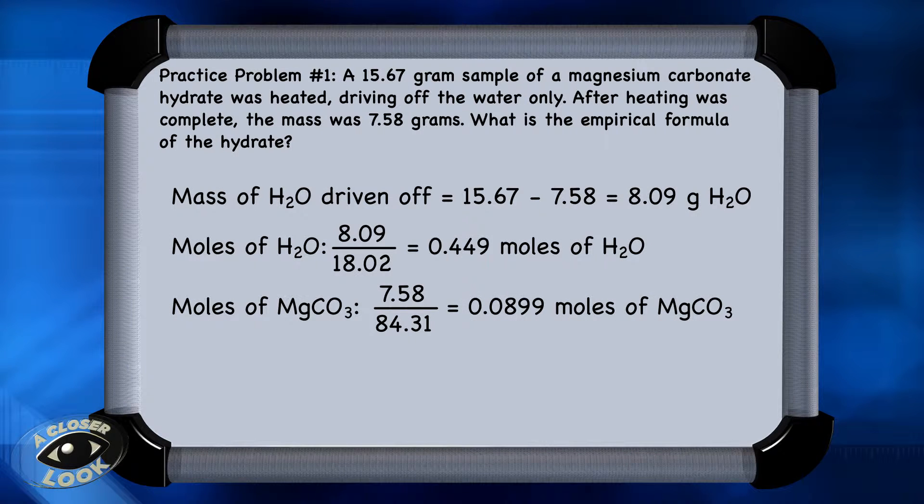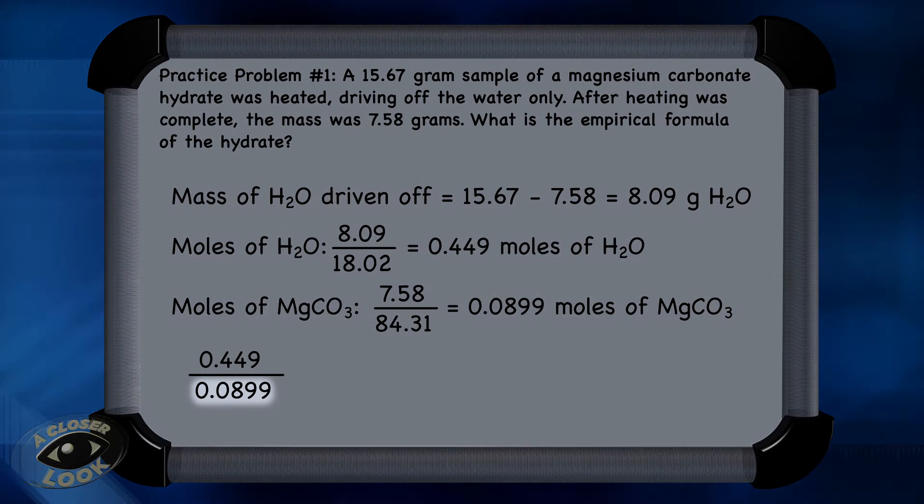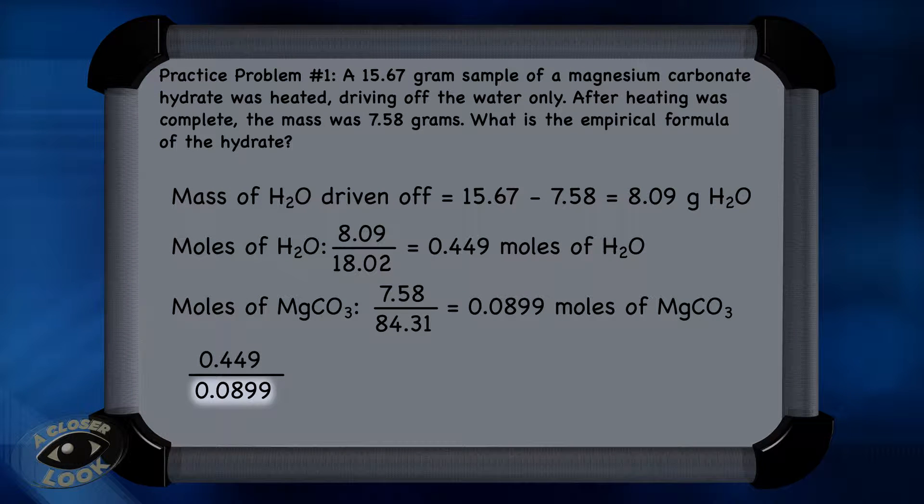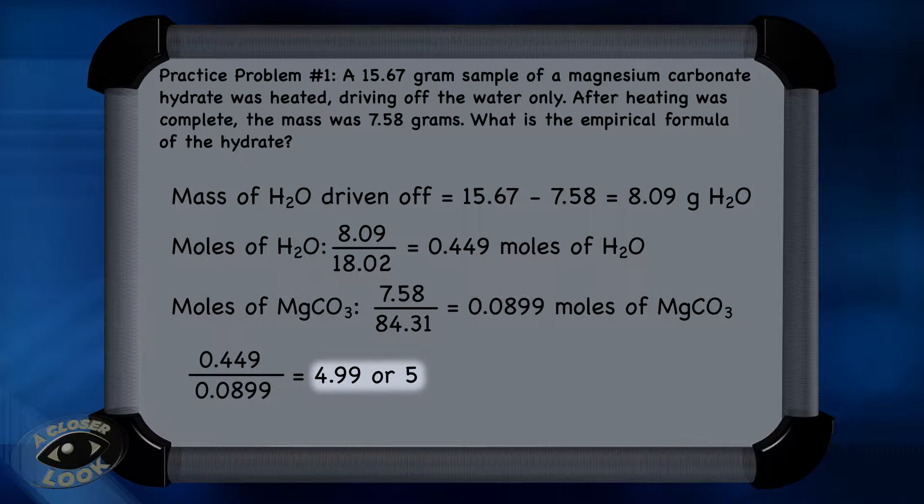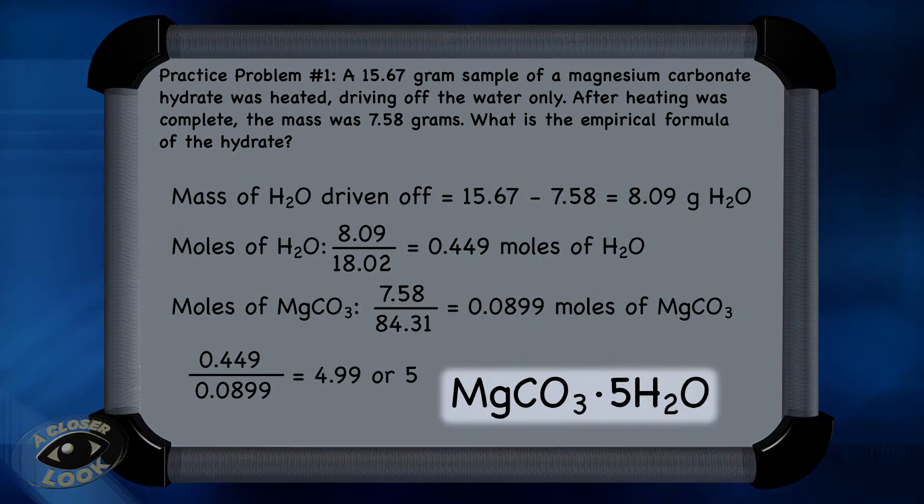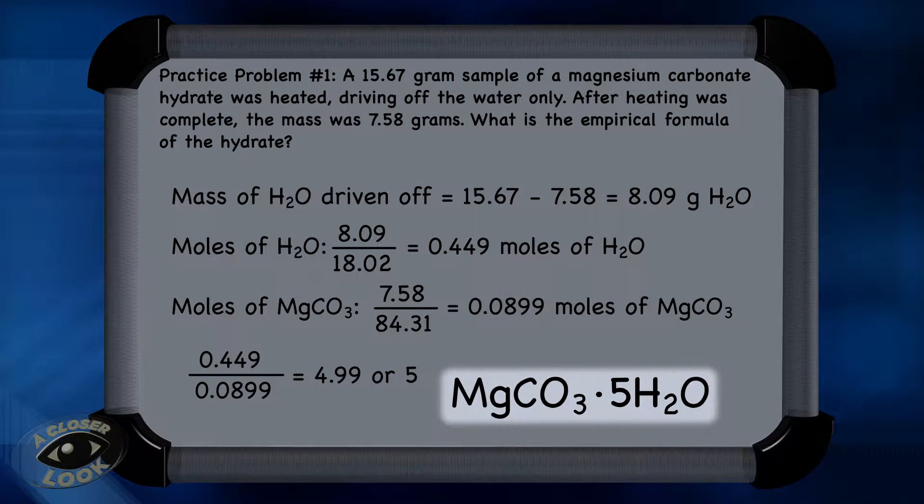Now you are ready to figure out the empirical formula for this hydrated salt. Divide 0.0899 moles of magnesium carbonate into 0.449 moles of water. That will give you the ratio of the moles of water to moles of the anhydrous magnesium carbonate, and that ratio is 5 moles of water for every 1 mole of magnesium carbonate. This is how you write the formula for the hydrated compound.